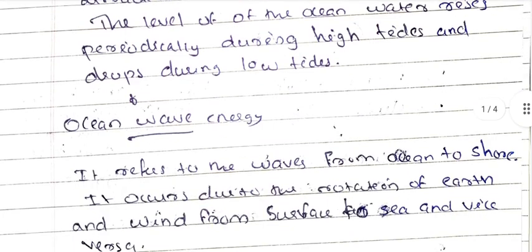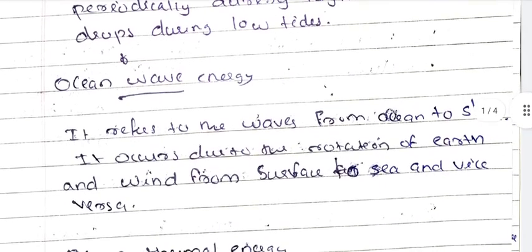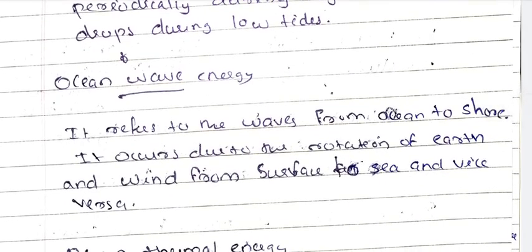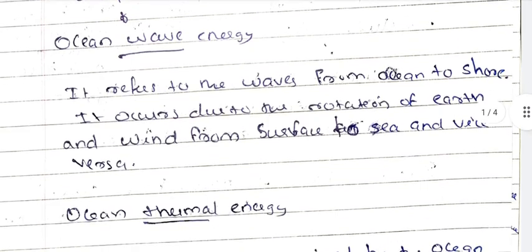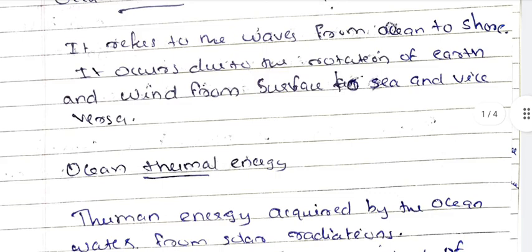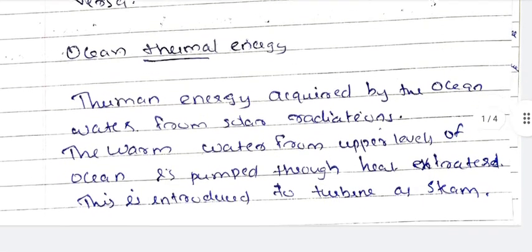Next is ocean wave energy. It refers to the waves from ocean to shore. It occurs due to the rotation of the Earth and wind from the surface to the sea and vice versa.